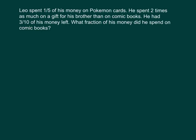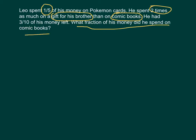What are the different things that Leo is spending money on? He's spending one-fifth on Pokemon cards. He's also spending money on a gift for his brother, and that amount is two times as much as what he spends on comic books. So he's buying Pokemon cards, a gift for his brother, and comic books. We'll write our focused answer: Leo spent blank of his money on comic books.